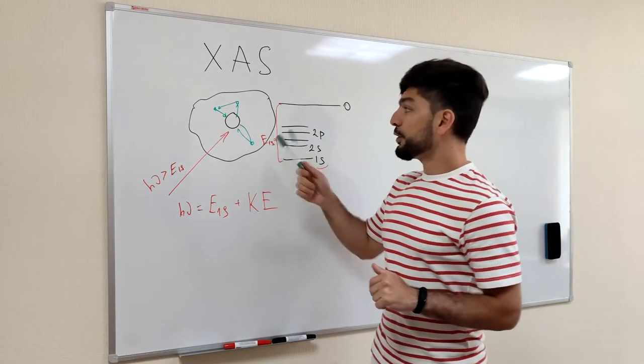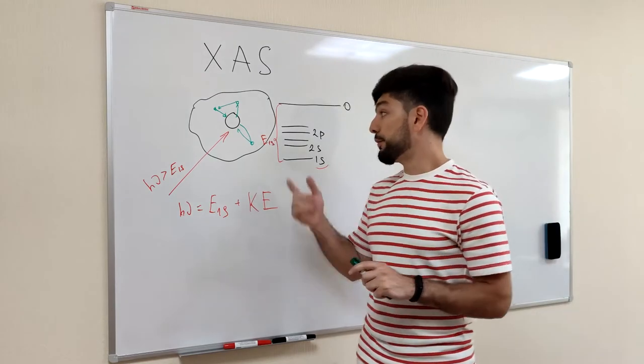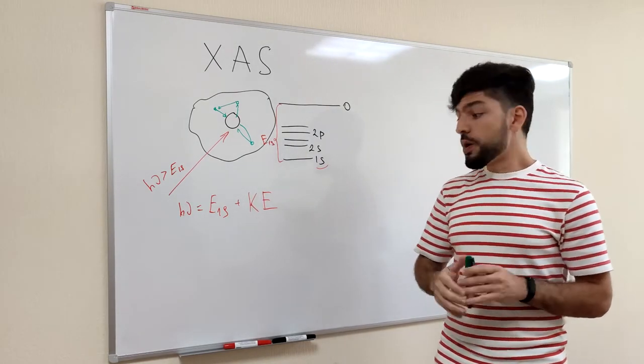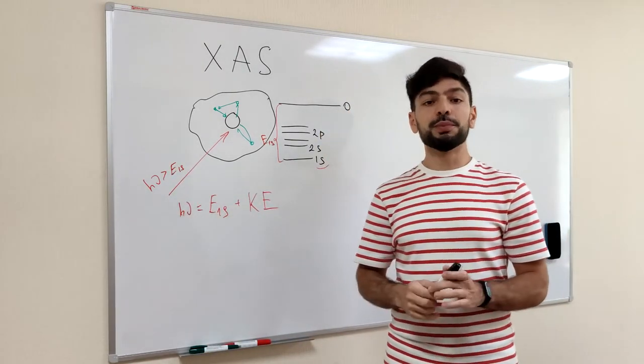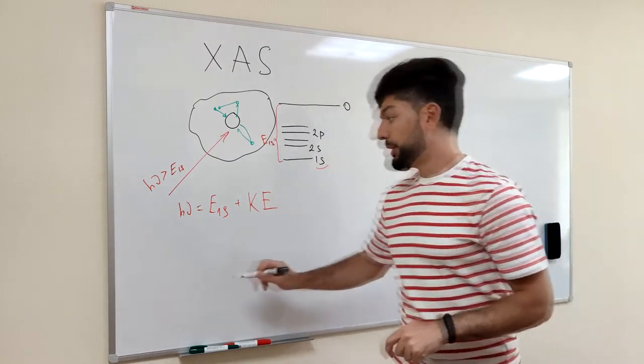The result of this collision will depend on the kinetic energy of the photoelectron. Therefore, if one can tune the energy of the incident photon beam, we will obtain a spectrum like this.